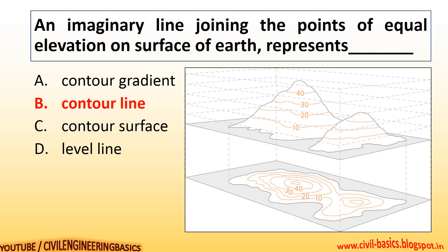An imaginary line joining the points of equal elevation on the surface of the earth represents a contour line. You can see the contour lines of a hill.